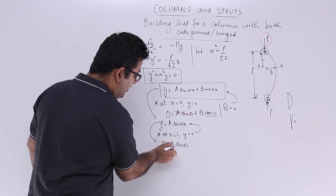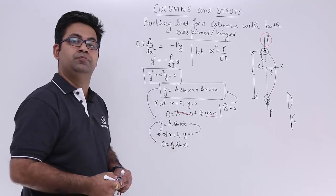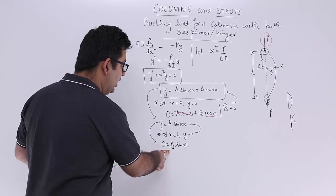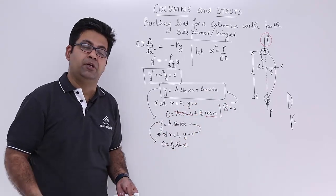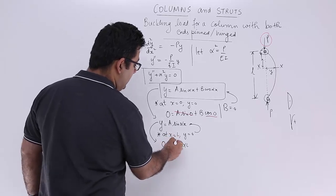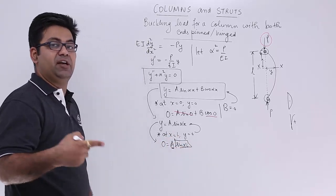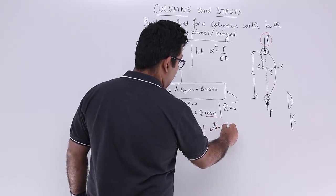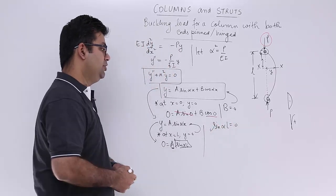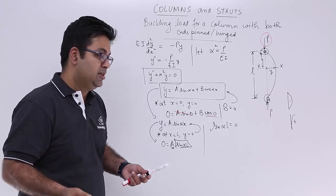Now I cannot assume A to be 0, because if A becomes 0 and your B becomes 0, then the entire solution has no meaning left. So I will have to say that in this case, sin alpha l is 0.